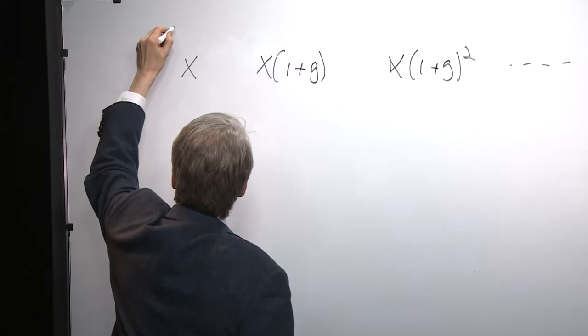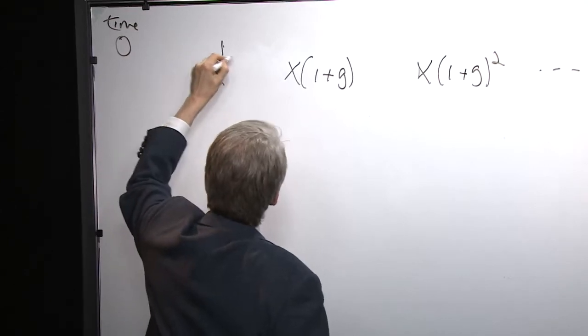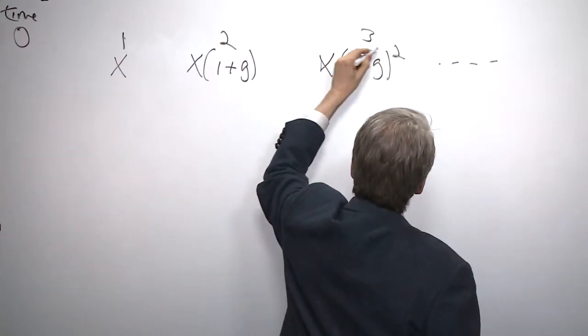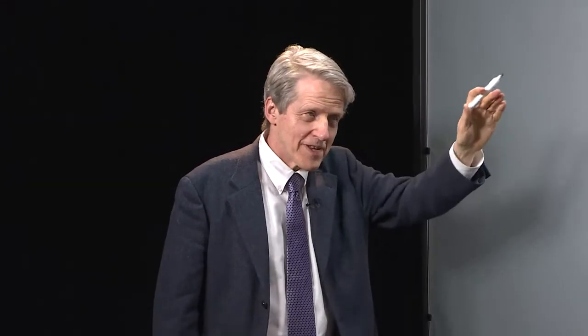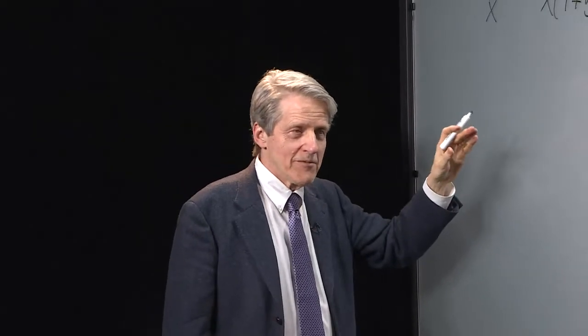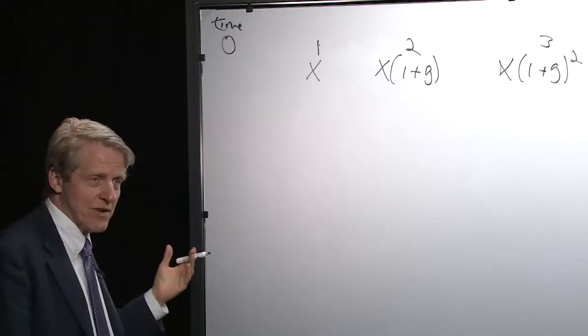So this is a timeline: time 0, then time 1, time 2, time 3, time 4 — it would be (1+g) cubed, and so on. I say this might be land because land, assuming it's managed properly and doesn't get depleted, will yield a crop every year. And as time goes on, the crop will be worth more, partly because demand probably goes up in a growing economy and partly because of technical progress, and we assume this land goes on growing like this forever.